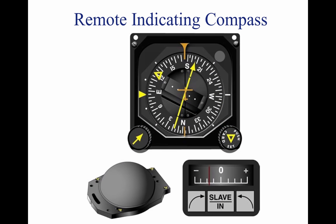Remote indicating compasses were developed to compensate for the errors and limitations of the older type of heading indicators. The two panel-mounted components of a typical system are the pictorial navigation indicator and the slaving control and compensator unit. The pictorial navigation indicator is commonly referred to as an HSI.